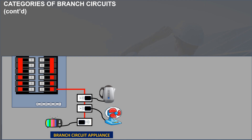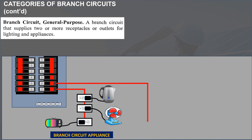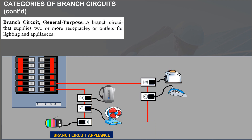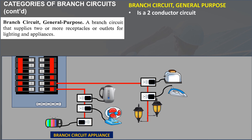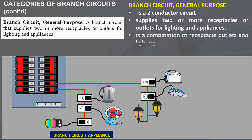Second, branch circuit general purpose: a branch circuit that supplies two or more receptacles or outlets for lighting and appliances. Therefore, a branch circuit general purpose is a two-conductor circuit that supplies two or more receptacles or outlets for lighting and small appliances. Branch circuit general purpose is a combination of receptacle outlets and lighting.